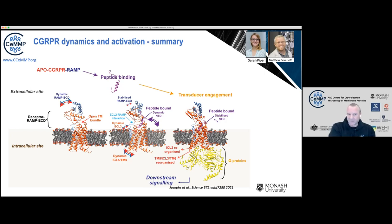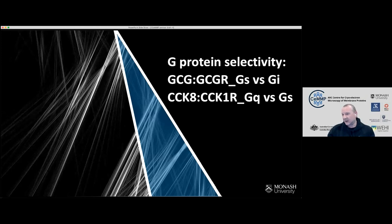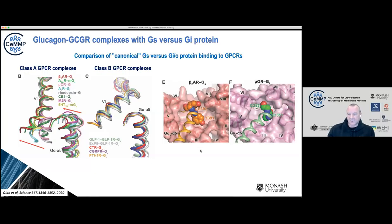That was one application where we've pushed cryo-EM into relatively small dynamic proteins to get new information about intermediate states. The second story I want to touch on is getting a better handle on G-protein selectivity at a structural level. I'll show two examples: the glucagon receptor bound to glucagon, where in collaboration with Bali Wu's group we got structures of Gs and Gi complexes — the first time anyone had obtained the same receptor with different G-proteins — and the CCK1 receptor bound to CCK peptide, canonically coupled to Gq, for which we have Gq and Gs structures.